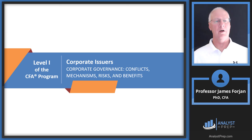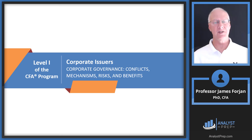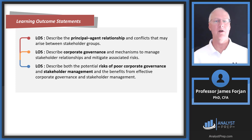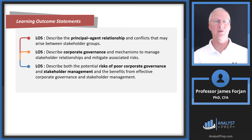This is Level 1 of the CFA program, the topic on corporate issuers. The overwhelming majority of the reading focuses on corporate governance, but I want to call your attention to the first 10 or 15 pages. This covers everything I teach in corporate finance class that answers questions like: what is the structure of a business, what is the structure of a corporation, and how does it essentially make decisions? We'll talk about the principal-agent relationship and then start with a discussion on the different stakeholders.